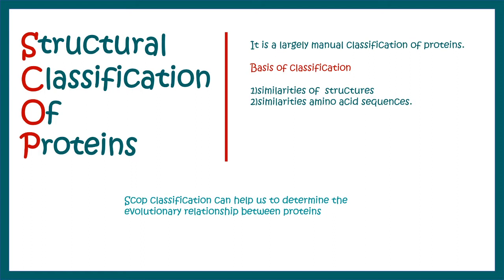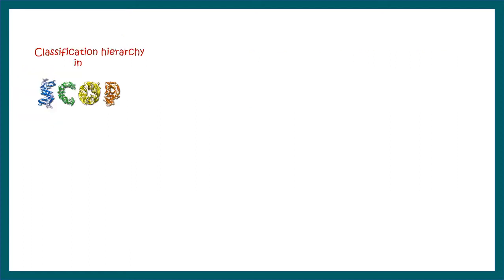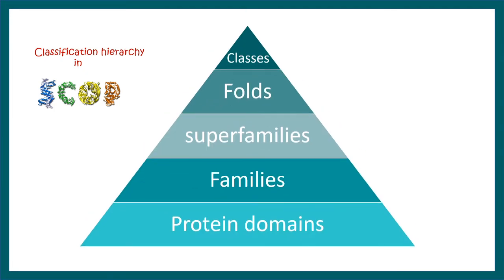Many of you need to know what is the hierarchy present in SCOP. SCOP has these hierarchies: at the top there is class, then folds, superfamilies, families, and protein domains. Many of these hierarchies are similar to CATH as well.